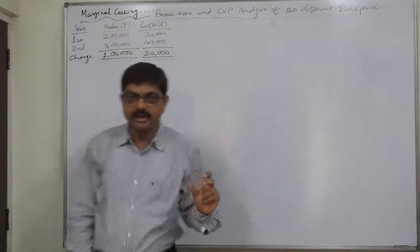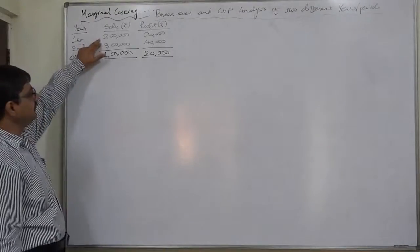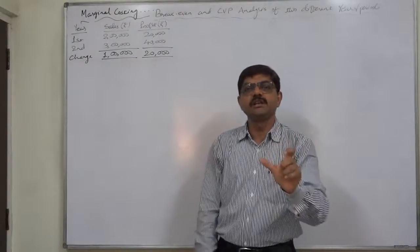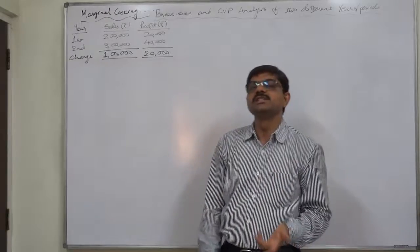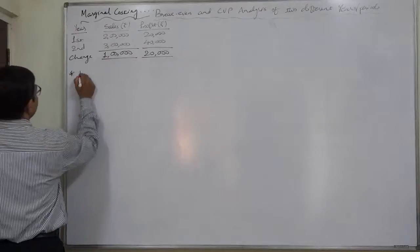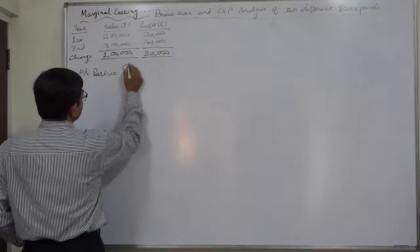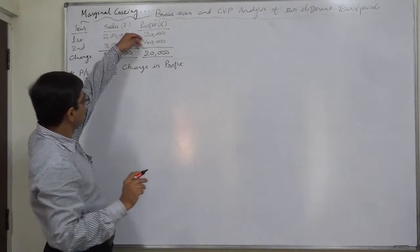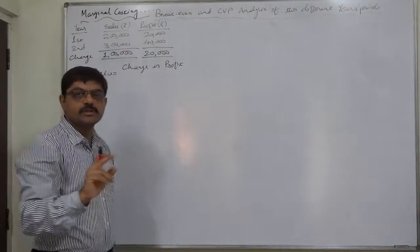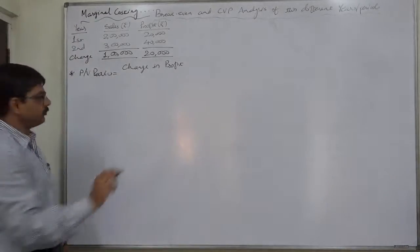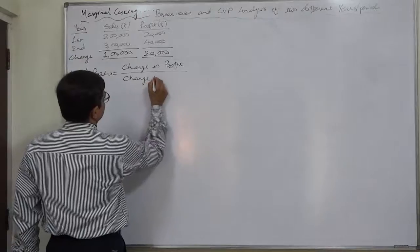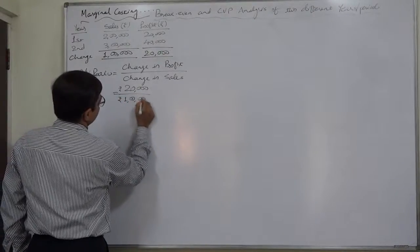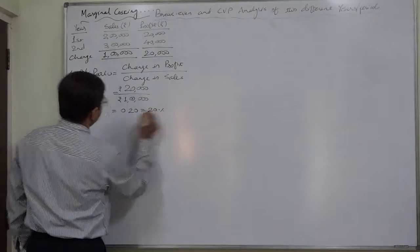The formula for PV ratio is contribution divided by sales. We have sales but not contribution directly. Extending the same logic, we can use the formula: change in profit — which equals change in contribution — divided by change in sales. The change in profit is Rs. 20,000 and the change in sales is Rs. 1,00,000. So the PV ratio comes to 0.2, or more precisely 20%.